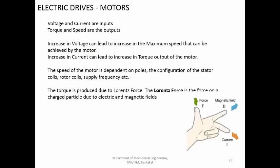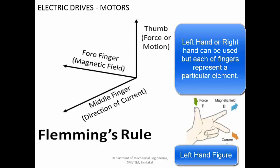Rotation takes place based on the Lorentz force, and the direction of this force is given by Fleming's right hand rule. If you have a magnetic field and you place a conductor carrying current in it, then because of the action of the magnetic field on the current or electrons passing through it, a net force is generated on the conductor. The direction of this force is given by Fleming's right hand rule — these three elements will be in mutually perpendicular directions.